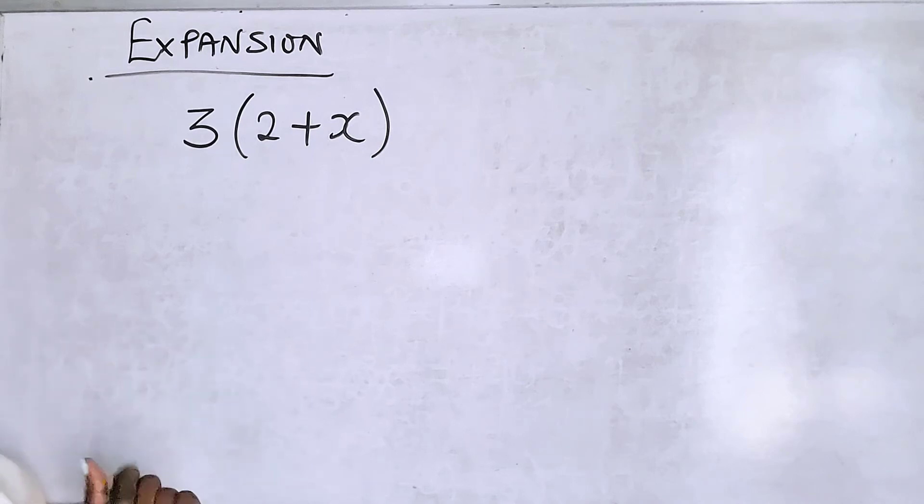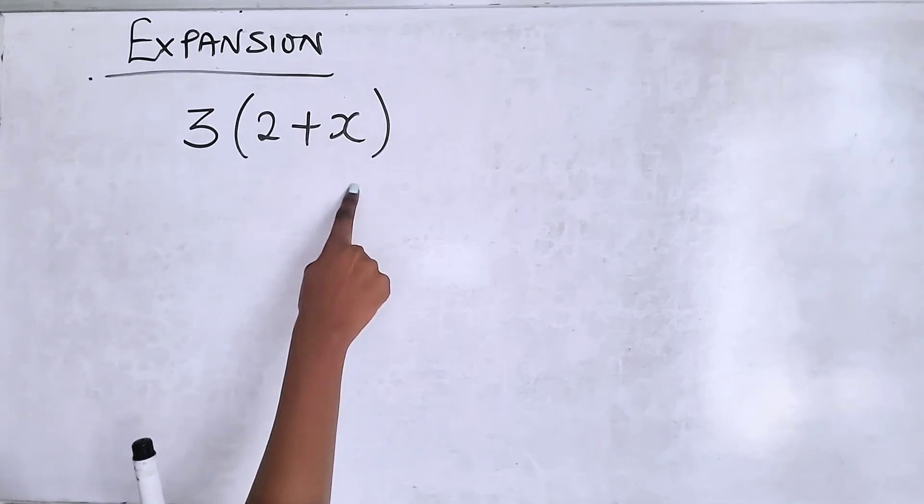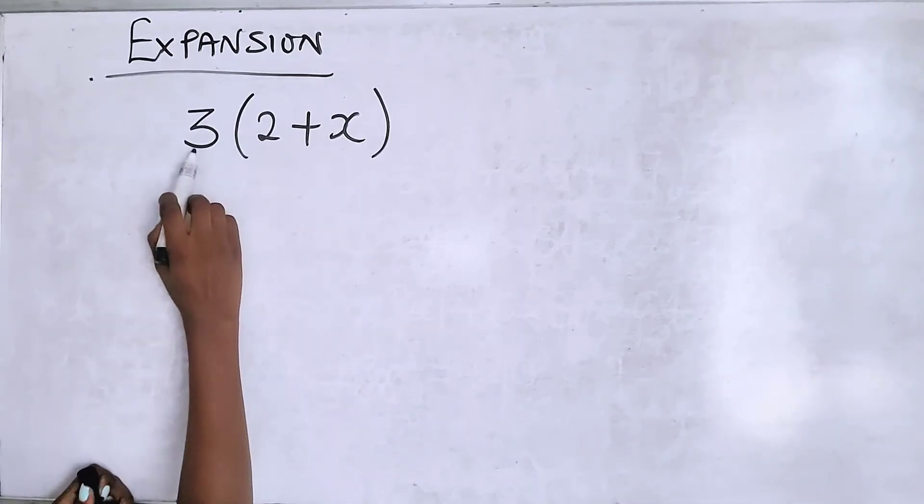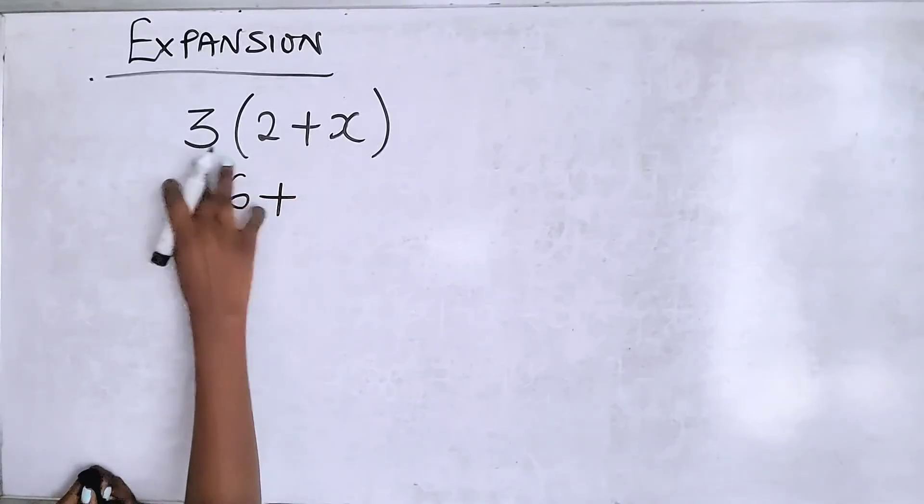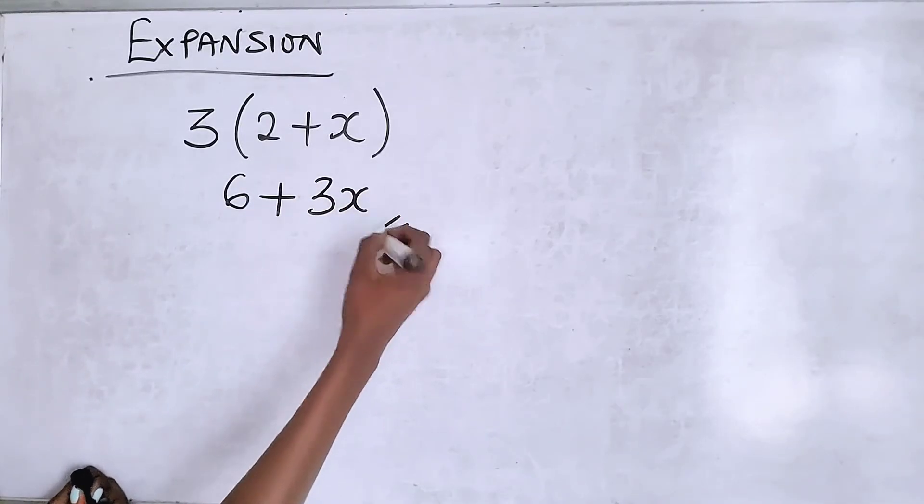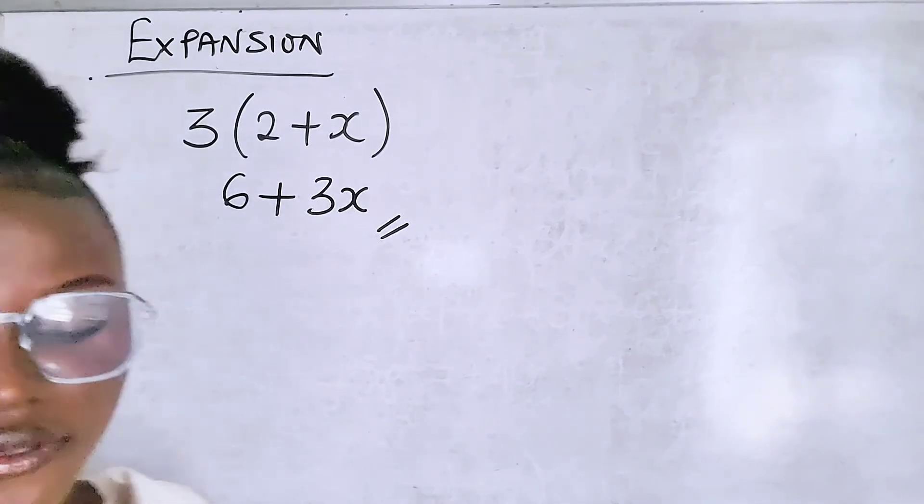This is also a case of expansion. So it doesn't look like we're doing just binomials and trinomials and not considering a case like this. So this is a term trying to open this bracket. So you know what to do. Three times two, three times X, and then you stop here because we cannot add this term together.